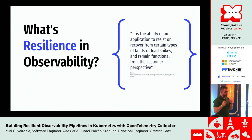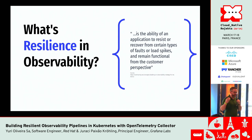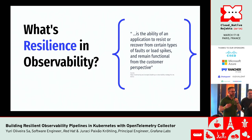To start this talk properly, let's understand what exactly resilience in observability is. I'd like to paraphrase a colleague who wrote that it is the ability of an application to resist or recover from certain types of faults. Now let's understand how the OpenTelemetry Collector can help our applications recover from certain types of faults.